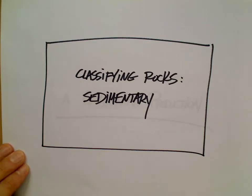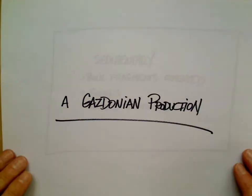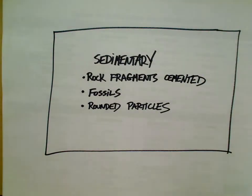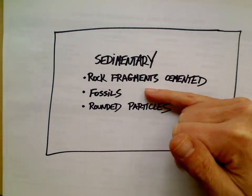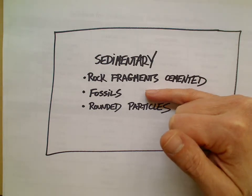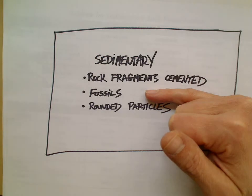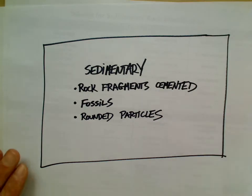Welcome everybody — classifying rocks: sedimentary rocks. I'm Mr. Gasta. Before we get into it, let's cover some key things we're going to find in sedimentary rocks. If it has rock fragments or pieces of rocks that are cemented together, it's sedimentary. If it has a fossil in it, it's sedimentary. Fossils form from dead organisms that fall to the bottom of a lake or ocean, fall in the mud, and get buried. If there are rounded particles, that's also going to be a sedimentary rock.